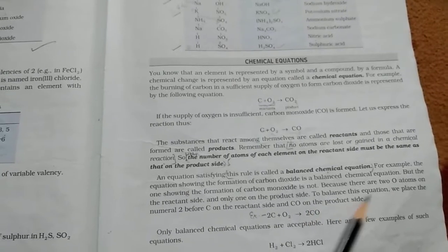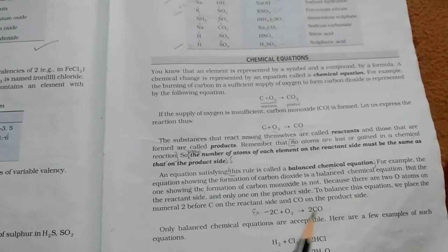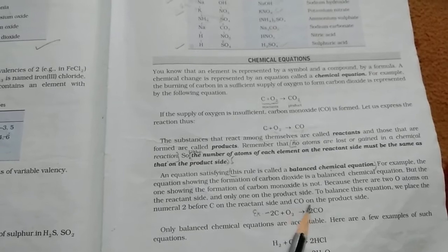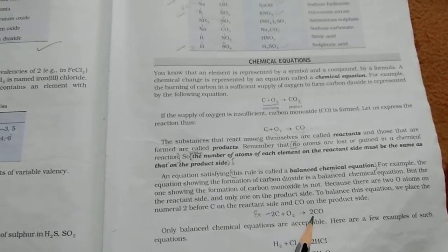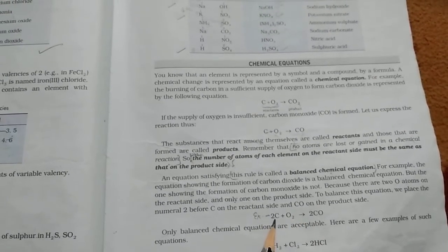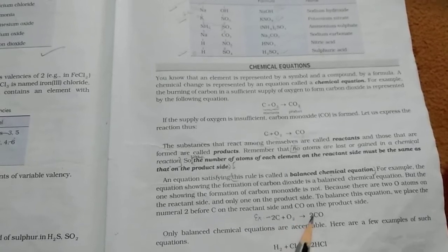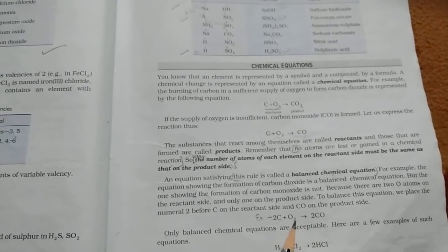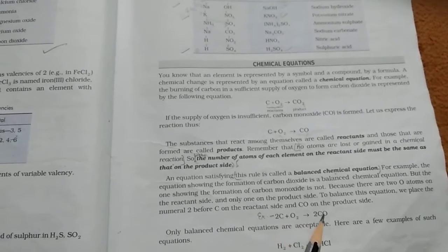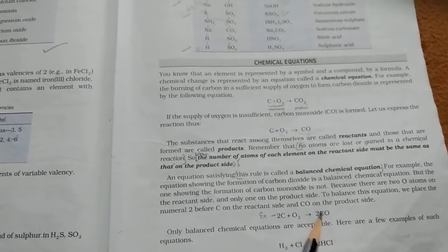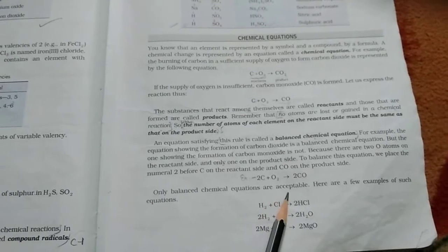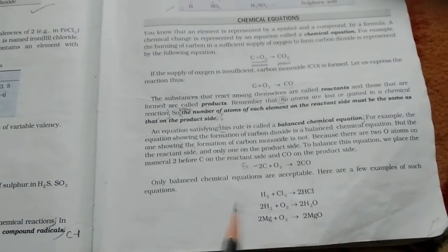To balance this equation, we place the numeral 2 before C on the reactant side and the product side. Now, two carbon is here. So, two carbon is here. And, two atoms of oxygen is present. So, here is two atoms of oxygen present. Only balanced chemical equations are acceptable. There are some examples like,